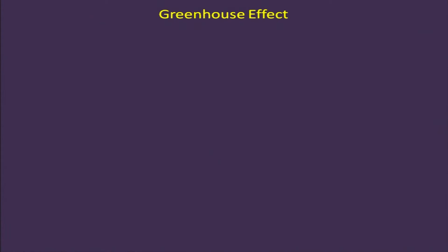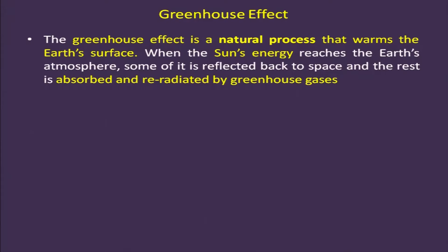The greenhouse effect depends upon reflectivity. The greenhouse effect is a natural process that warms the earth's surface. Not all energy coming from the sun reaches the earth's surface — some is absorbed by the atmosphere, reflected back by the atmosphere, and some is re-radiated by the greenhouse gases.